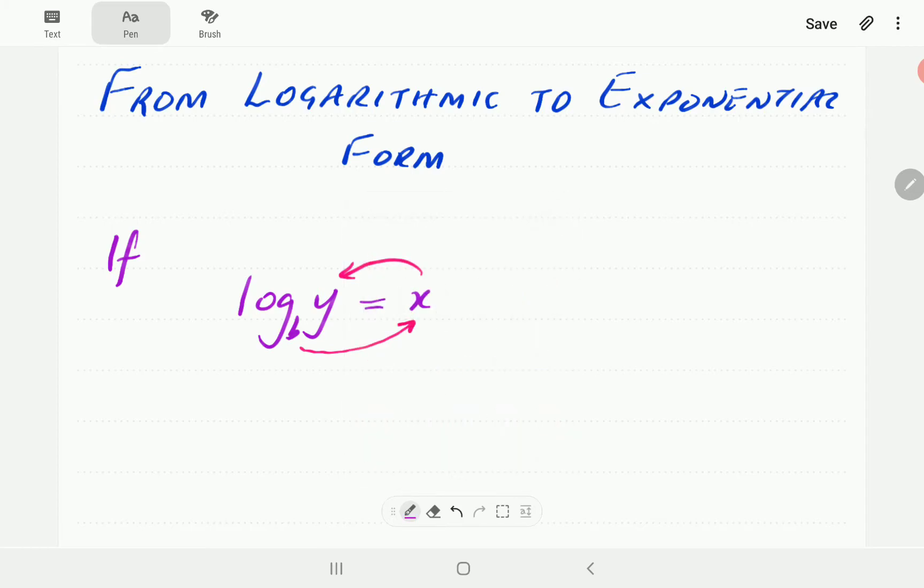We can write that mathematically as follows. Log y base b equal to x implies that b to the power of x is equal to y. This is called the exponential form of what we have on the left-hand side. This one is the logarithmic form.